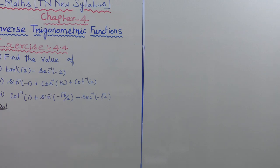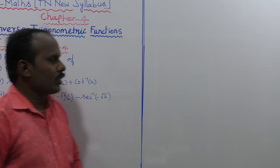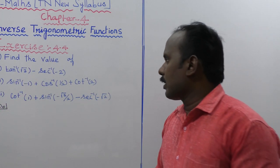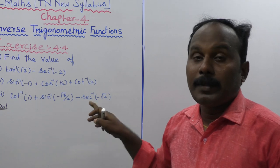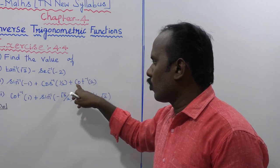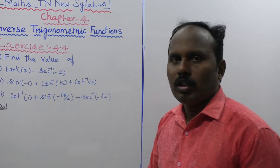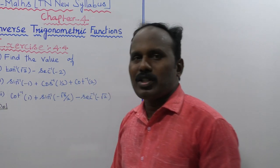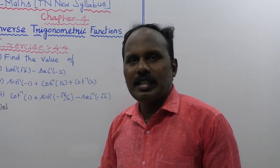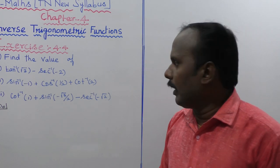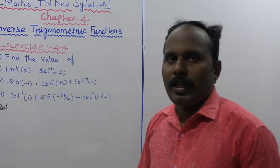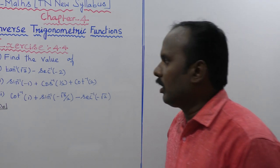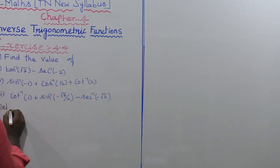Question number 2, second subdivision: sin inverse of minus 1 plus cos inverse of 1 by 2 plus cot inverse of 2. The cot inverse of 2 does not belong to the principal value range, so it does not change. cos inverse of minus 1 gives pi by 2, that is 90 degrees. cos inverse of 1 by 2 gives 60 degrees, that is pi by 3.